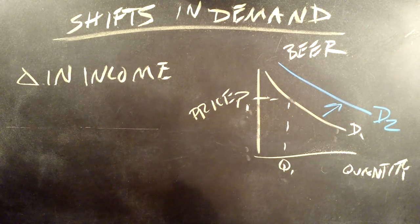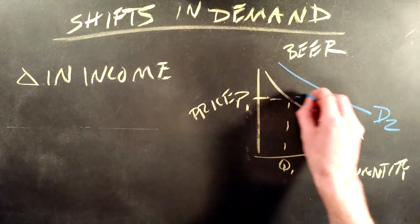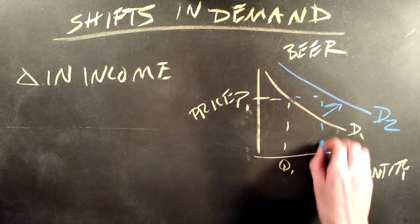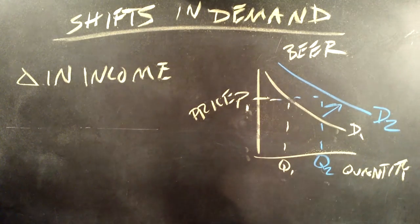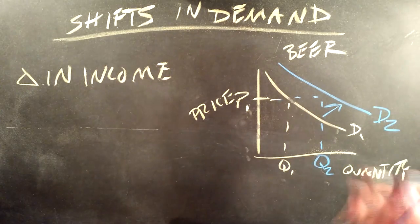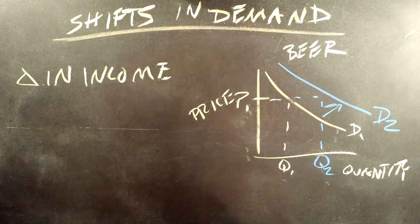With higher level of income, we go over to D2 from P1, and we end up with Q2. This is an increase in the quantity demanded due to a change in our example, an increase in income.